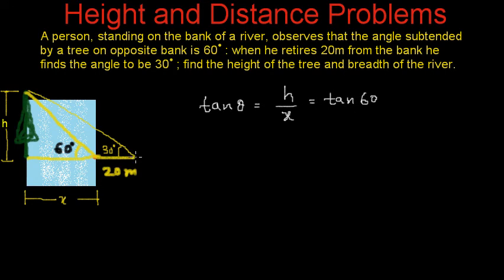And when we talk about this point, the point at which the man reaches after retreating by 20 meters, here the angle becomes 30 degrees. And in this case, h by x plus 20 is equal to tan 30. We know the value of tan 60 is square root of 3 and the value of tan 30 is 1 by root 3.